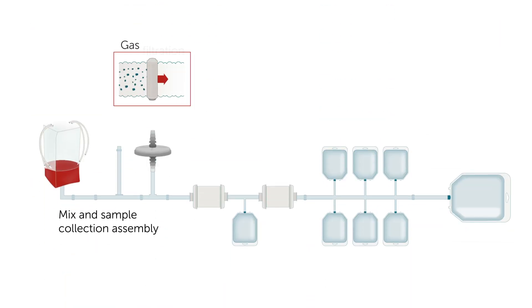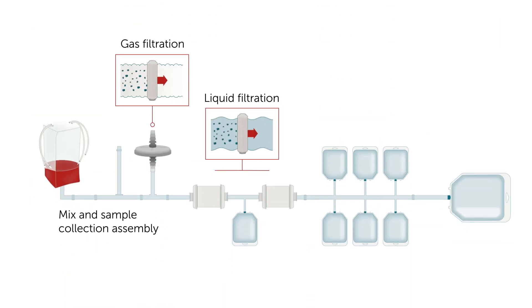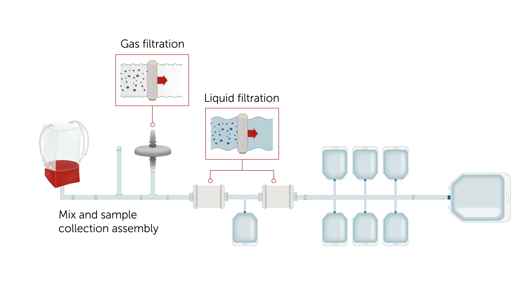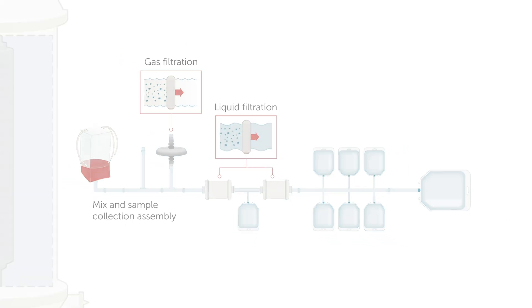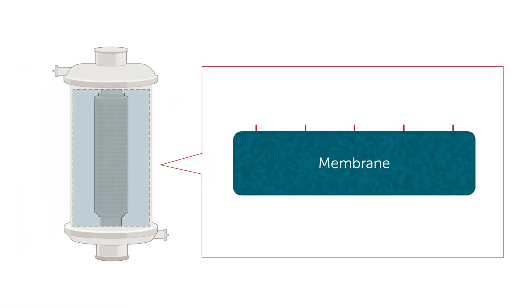Sterile filtration is used to remove biological contaminants at multiple points for both liquid and gas applications. The membrane chemistry and properties help dictate the appropriate application for each processing step.